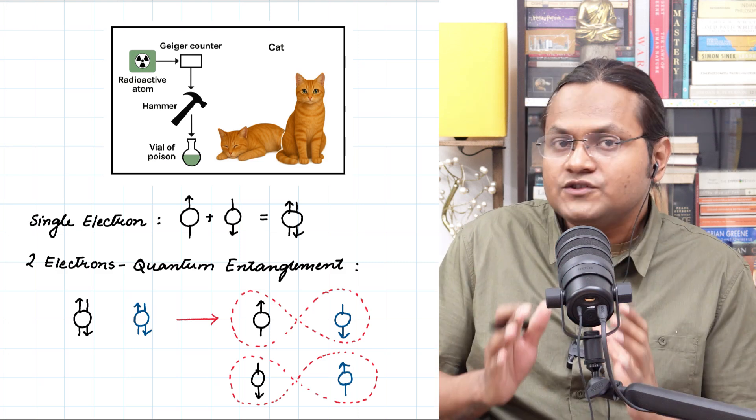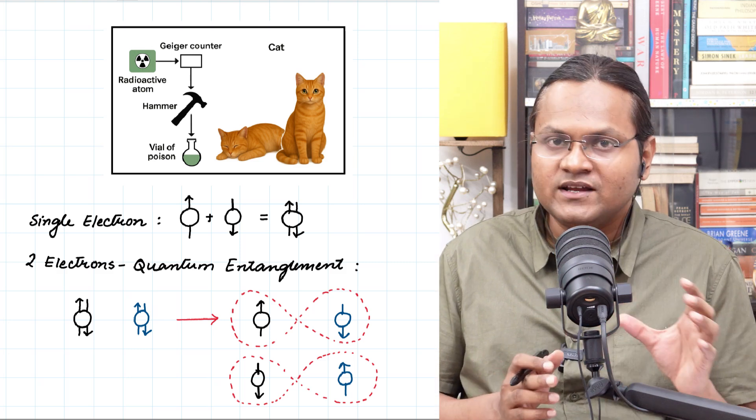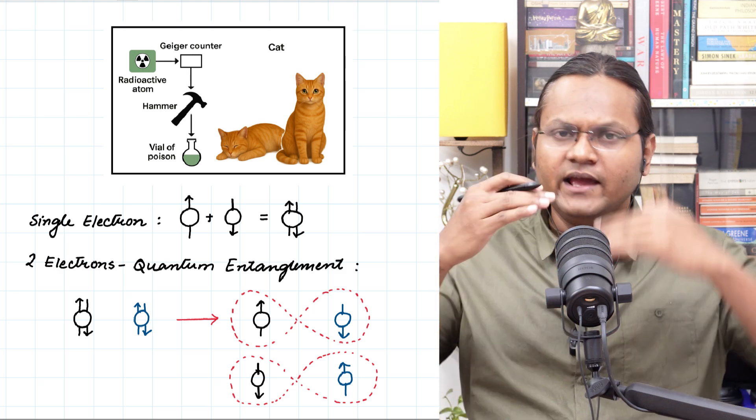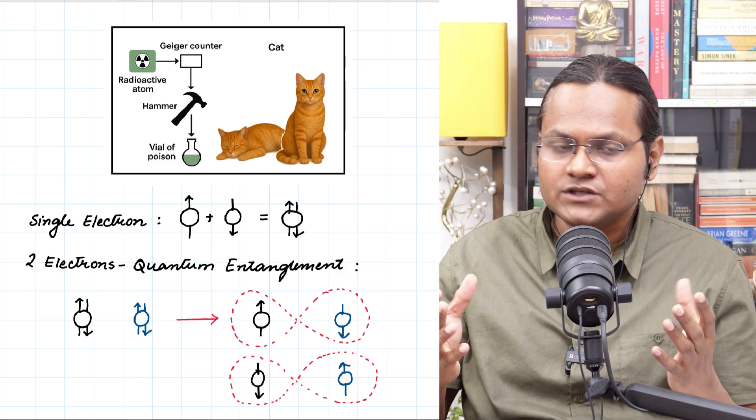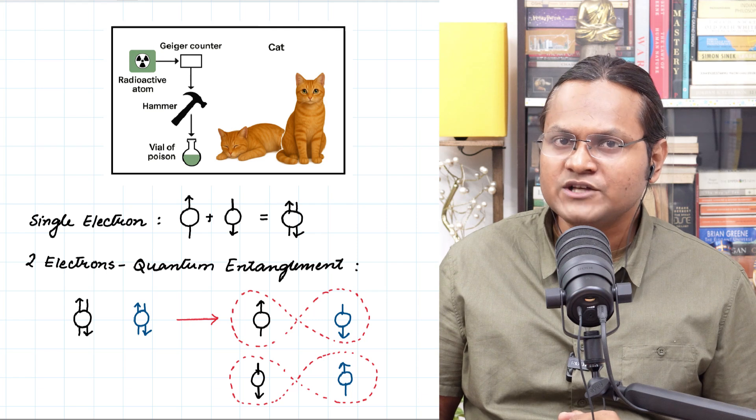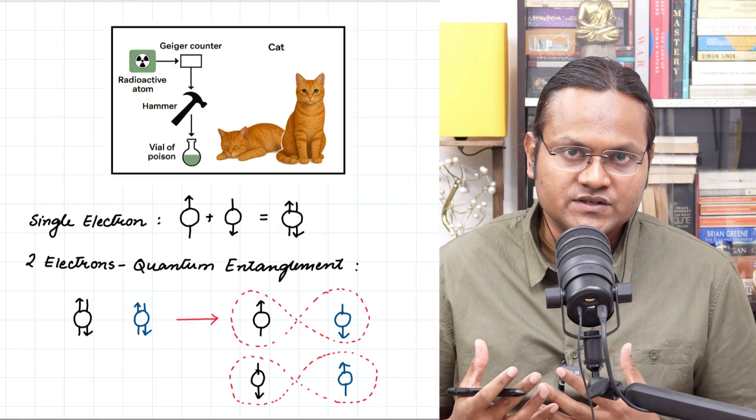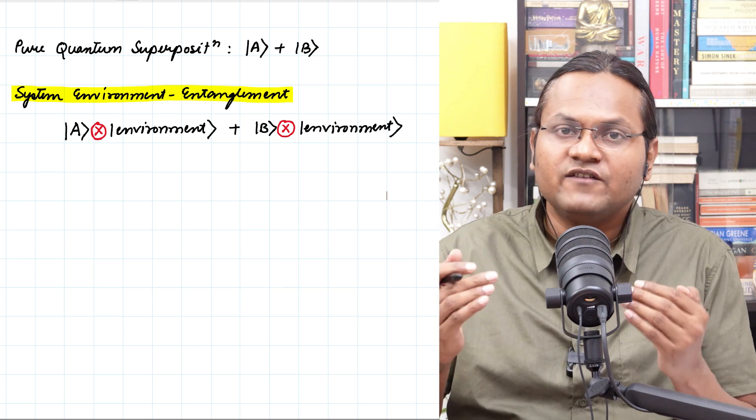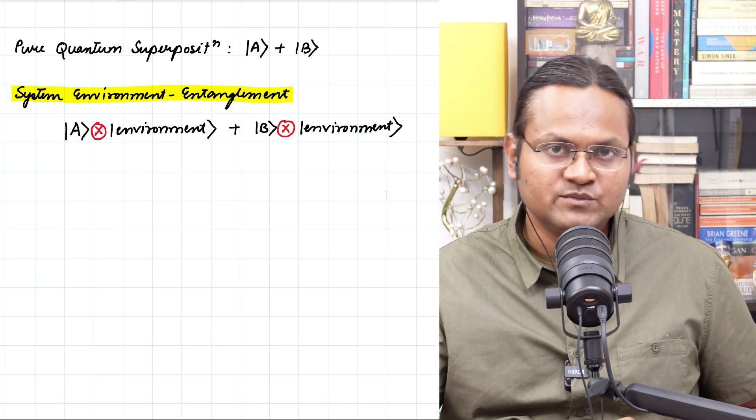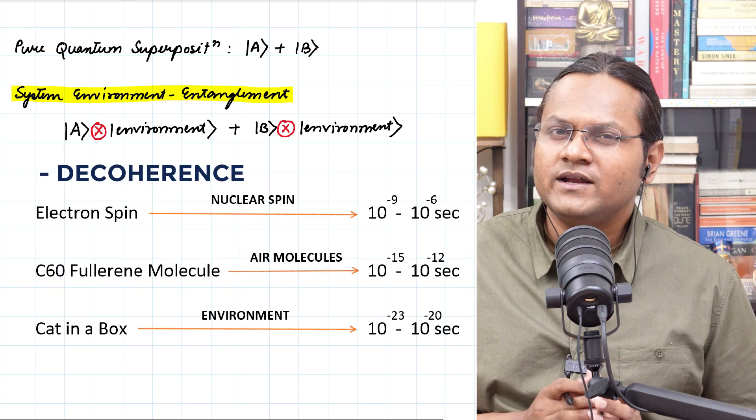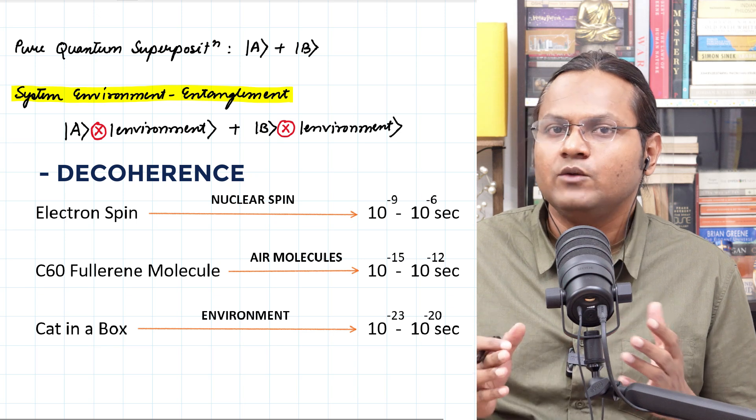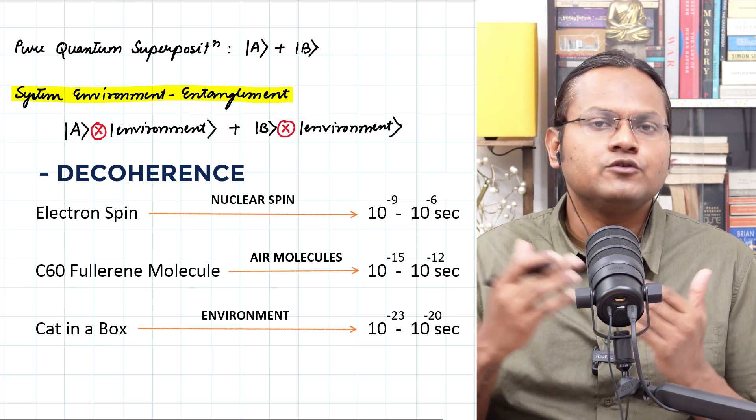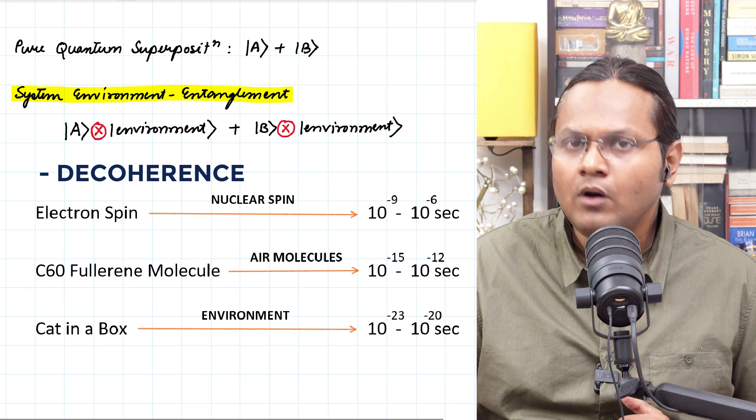And without knowing the state of every other particle in the environment, it is not possible to define the state of that singular electron. This loss of quantum superposition when a particle interacts with other particles, thereby creating layers of entanglement in the process, which cannot be calculated or measured, is known as decoherence. You see different kinds of particles experience this kind of a decoherence in different time scales. If it is a small particle like an electron, which is interacting with a nearby nucleus, the time scale may be measurable. But if it is a macroscopic particle like a cat in a box, the time scale is very, very, very small, almost zero for our considerations.